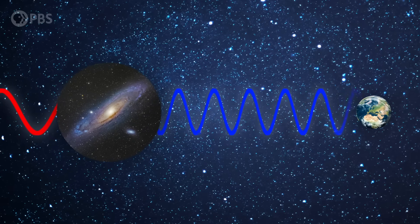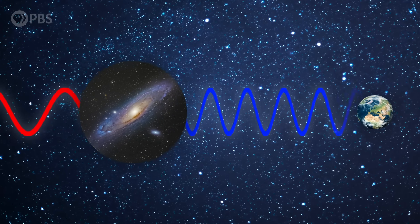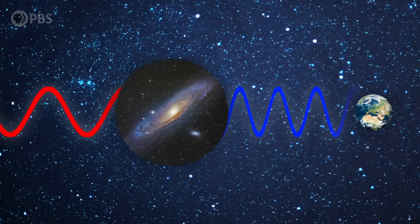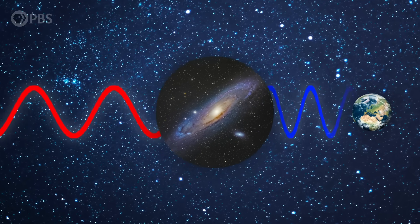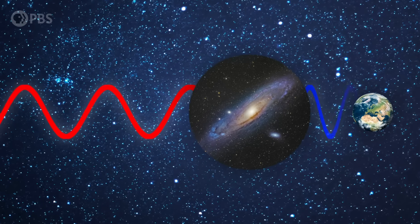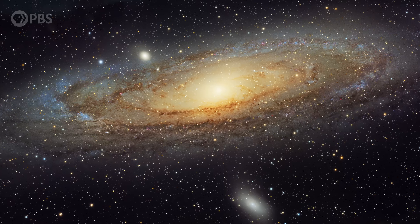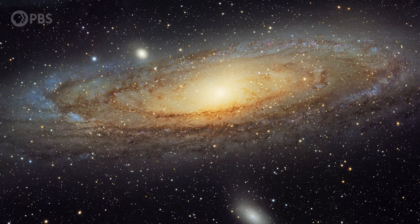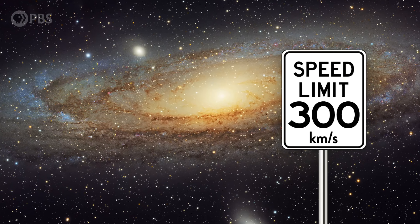The only explanation Slipher could come up with was that whatever he was looking at had to be moving. Because if it were moving toward Earth as it radiated light, the wavelengths would bunch up and appear bluer than they actually were, like a kind of Doppler effect. Based on how much the lines were shifted, Slipher could even tell how fast Andromeda was moving toward us. And the answer was ridiculously fast, something like 300 kilometers a second.